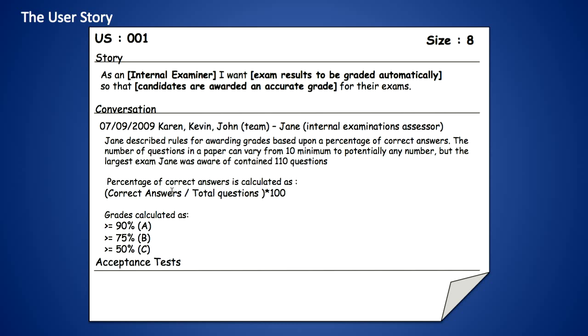The number of questions in a paper can vary from 10 minimum to potentially any number, but the largest exam Jane was aware of contained 110 questions. The percentage grade formula is: correct answers divided by total questions times 100. Grades are calculated as follows: anything over 90% receives an A, anything over 75% a B, and anything over 50% receives a C. At this point we begin to get some idea of the complexity and award this user story an eight based upon this level of complexity.